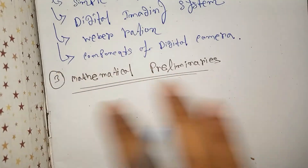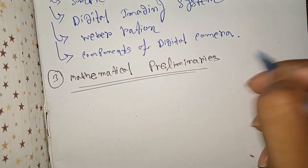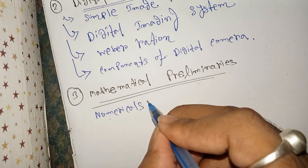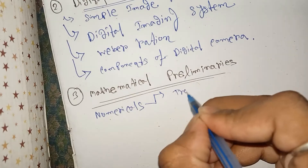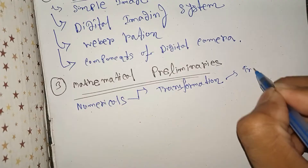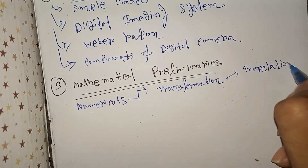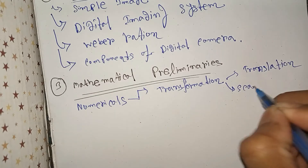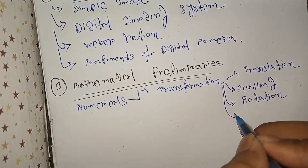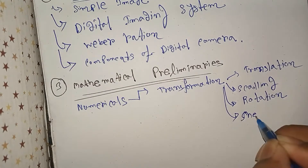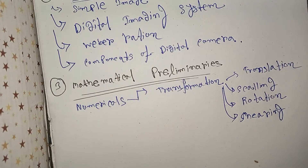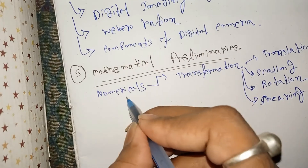Chapter three is Mathematical Preliminaries, which is important from a numerical perspective. Various types of numerical questions can be asked, including transformations such as translation, scaling, rotation, and shearing. From each portion, one numerical can be asked.